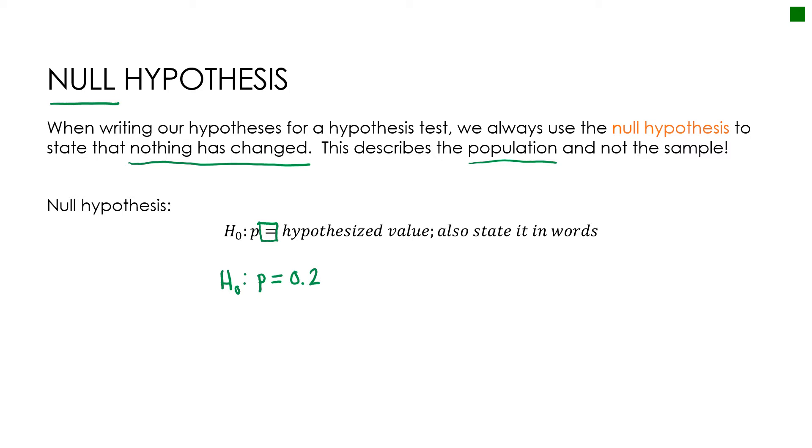Remember we're hypothesizing that nothing has changed. It does not matter that I actually found a sample of 17%; it only matters that I'm assuming that nothing has changed, that it will continue to be 20%. Then I will write this in words, and a lot of people miss this point every time on every assessment. All I need to do is state in words what p equals 0.2 means.